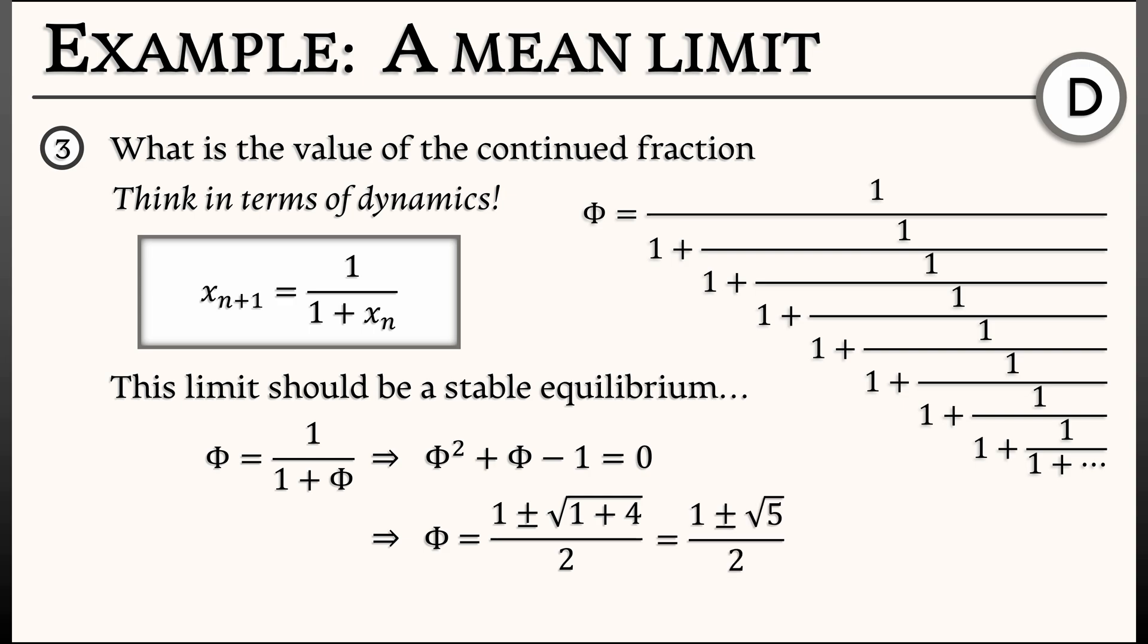And I recognize these numbers. These are the golden mean, if I look at the positive root, and the silver mean, if I look at the negative root. Now, this gets a little interesting. I have two equilibria for this dynamical system. Which one of them is the actual limit? Which one is this continued fraction converging to? Let's think.